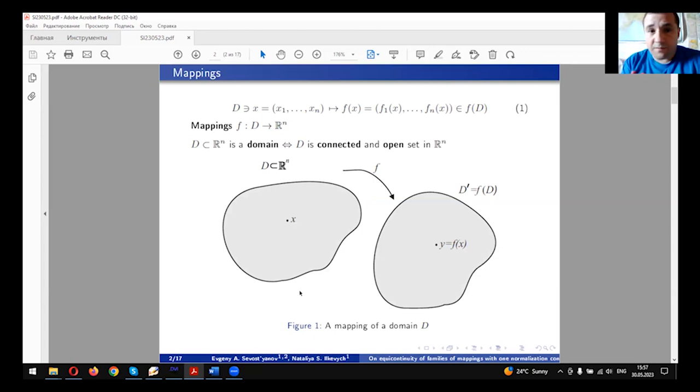x is a vector (x_1, ..., x_n), and f(x) is a vector as well. We say that mapping is defined in the domain D and takes values in R^n as well.